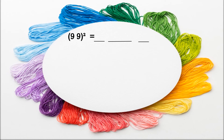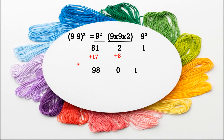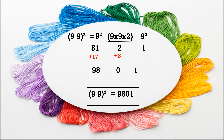Children, this is our last example. For 99 squared: the first number is 9 squared, the last number is 9 squared, and the middle number is 9 into 9 into 2. So 9 squared is 81, the middle number is 162, and again 9 squared is 81. The unit digit 1 remains, and the 8 is added to 162, giving 170. Then 17 is added to the previous 81, giving 98. So our final answer is 9801 — meaning 99 squared equals 9801.